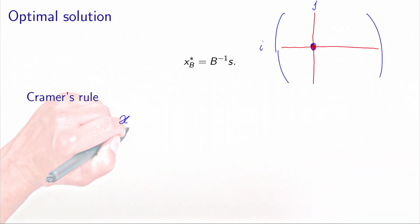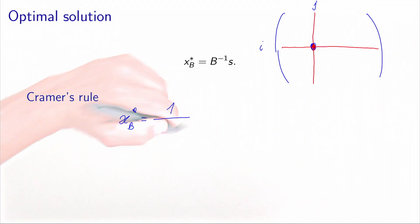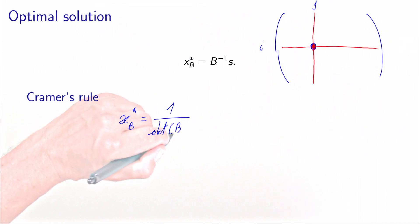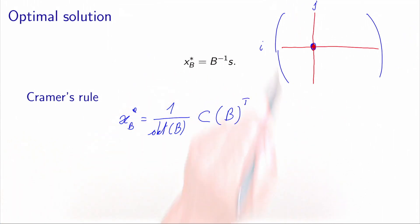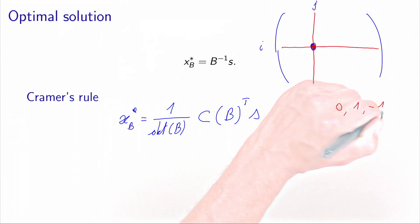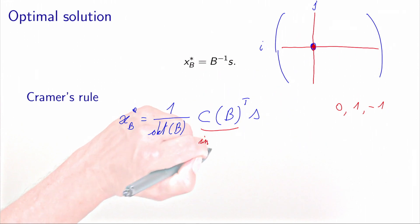In that case, we can write x*_B as 1 divided by the determinant of B, times the cofactor matrix of B, times s. Let's now remember that each entry of the matrix B is 0, 1, or minus 1. Because B is composed only of 0, 1, and minus 1, the cofactor matrix — which is calculated involving determinants — contains only integer values.